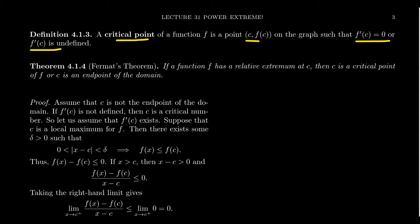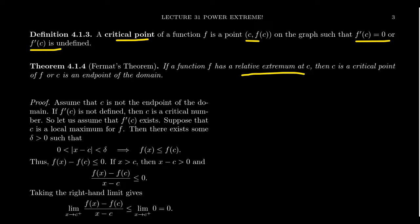Those correspond to the pictures we saw earlier: a round transition or a sudden transition due to a sharp point. Because of a theorem due to Fermat, if a function f has a relative extremum at c, then c corresponds to a critical point or it coincides with an endpoint of the domain. So the only ways to get an extremum are: derivative is zero, derivative is undefined, or you're on the boundary.